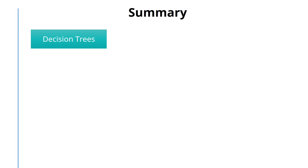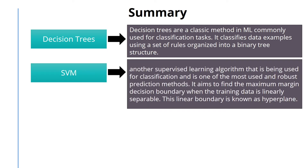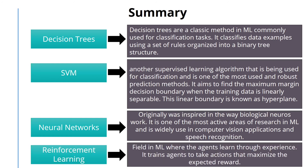In summary, in this video we first discussed decision trees. Decision trees can classify data examples using a set of rules organized into a tree structure. We talked about SVMs, another supervised learning algorithm used for classification and one of the most robust prediction methods. The SVM approach is based on the idea of finding the maximum margin decision boundary — this linear decision boundary is called a hyperplane. We discussed the concept of neural networks, which was originally inspired by biological networks of neurons in human brains. It is one of the most active areas of research in machine learning and is widely used in computer vision and speech recognition. Finally, we talked about RL, a field in machine learning where agents learn through experience, training agents to take actions that maximize the expected reward.